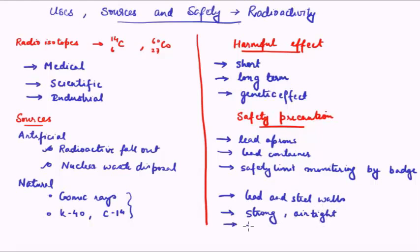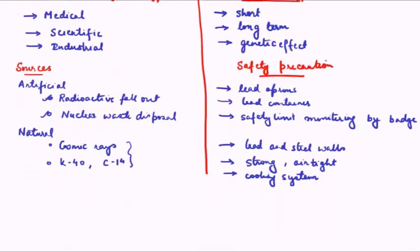And finally, there should be a very good cooling system. Why so? Because if there is overheating, then that is a very bad sign and that might lead to accidents in the nuclear reactors. Therefore, the cooling system should be intact and in place. Finally, the safety precaution, the final aspect is that the disposal of the radioactive waste or the nuclear waste should be taken care of.